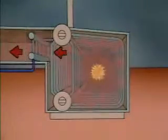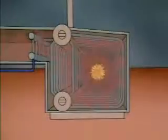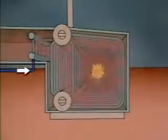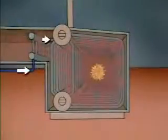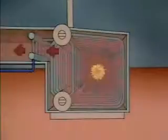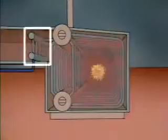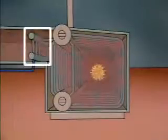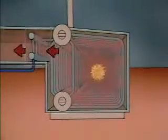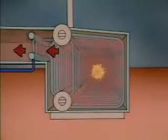Feed water is routed through the economizer tubes on its way to the steam drum and is heated by the hot combustion gases flowing past the tubes. The economizer improves boiler efficiency by making use of heat in the combustion gases that would otherwise be wasted.